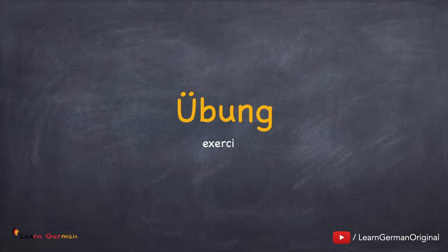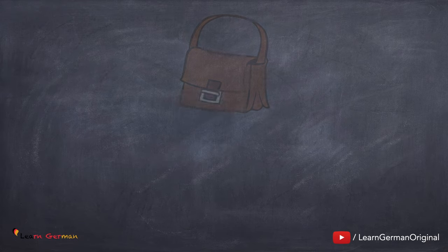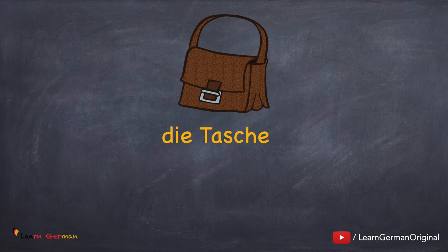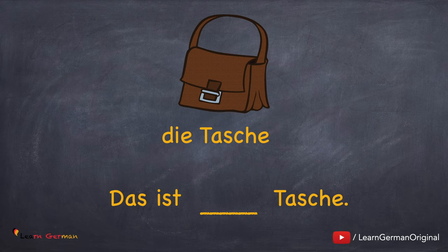Let's do a small exercise to see what you have understood. Übung. In the following sentences you have to fill in the blank with unbestimmte Artikel. Die Tasche — so what will be the indefinite Artikel for die Tasche? Das ist eine Tasche.